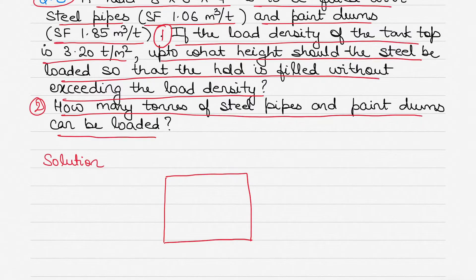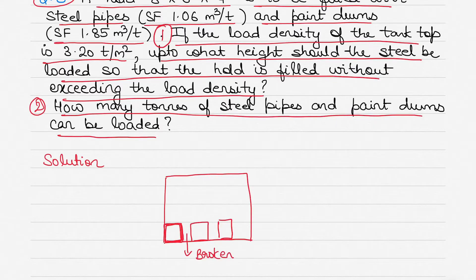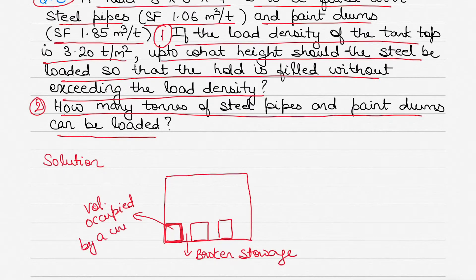Consider the cargo hold loaded with paint drums. A unit weight of paint drums — say, one pallet — and the volume occupied by those paint drums on that pallet is the storage factor. In comparison, the space between pallets loaded in the cargo hold is the broken storage. Although broken storage isn't mentioned in this question, I've included the term to clarify its meaning. So the storage factor depends on how a unit weight of cargo is packaged.